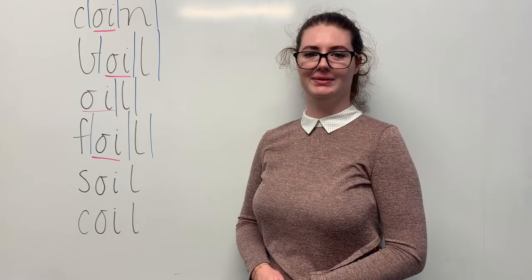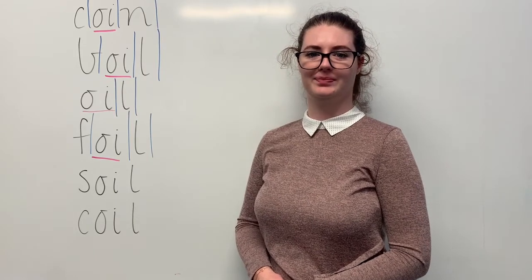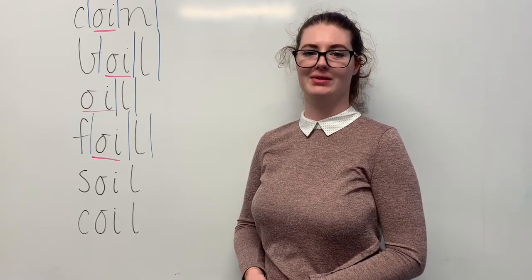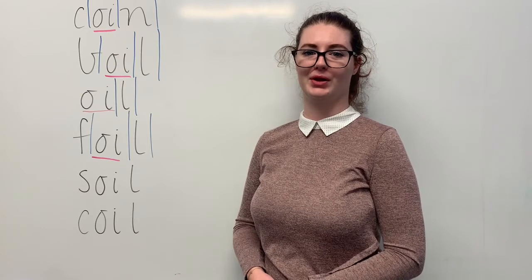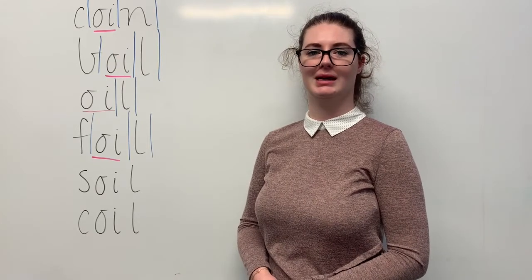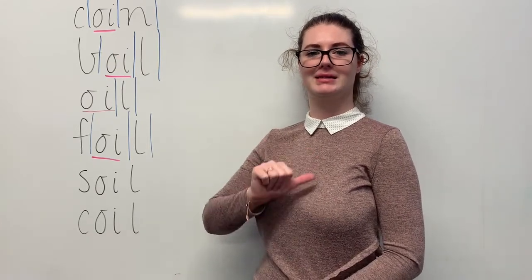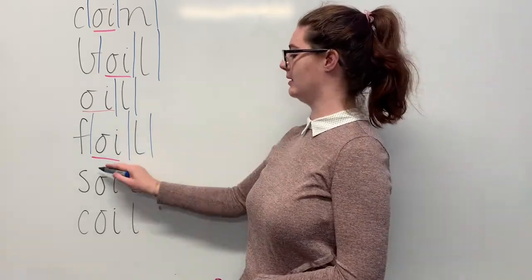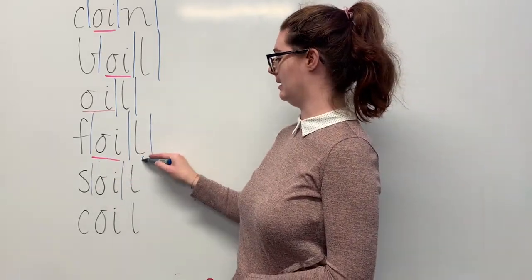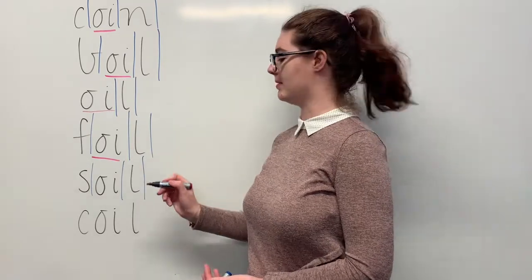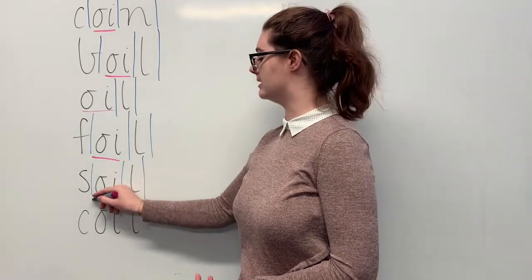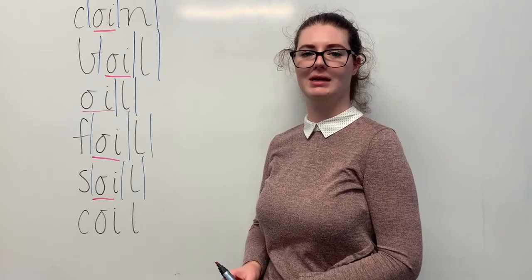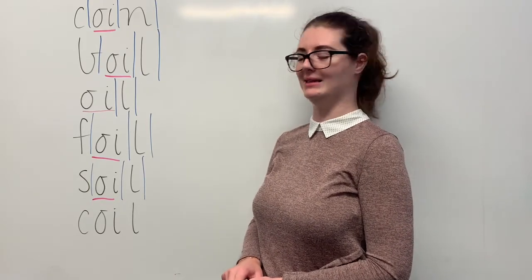Our next word is soil. Say soil. When I'm gardening, I always get soil up my fingernails and all over my clothes. The sounds in soil are, together, s, oi, l. The letters in soil are s, o, i, l. The part we need to remember is the oi digraph making the oi sound. Can you teach it to me? Soil: s, o, i, l.